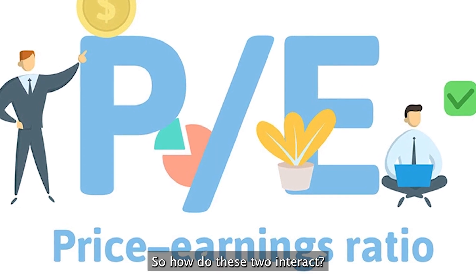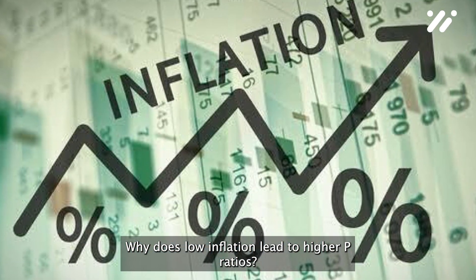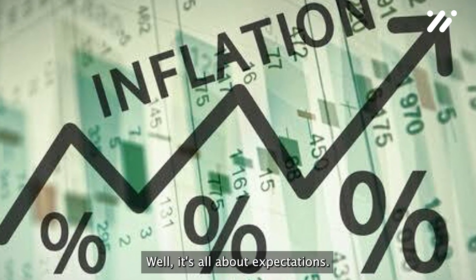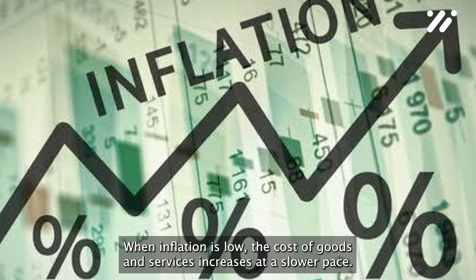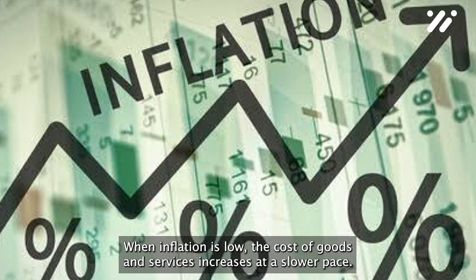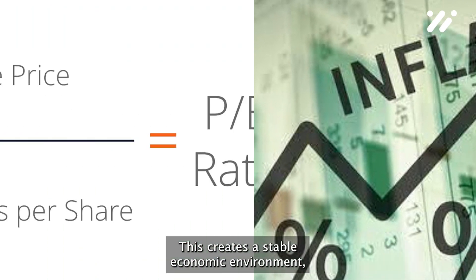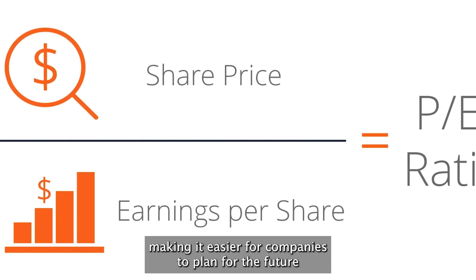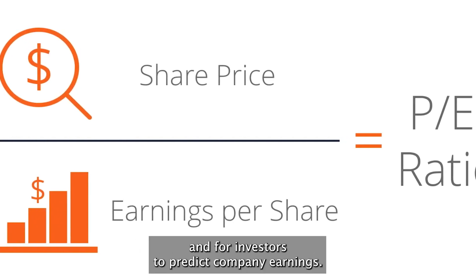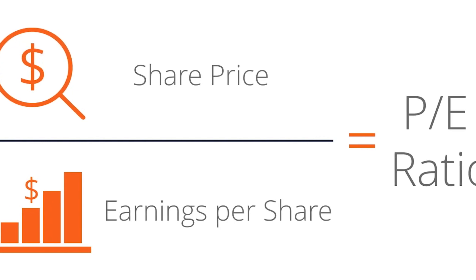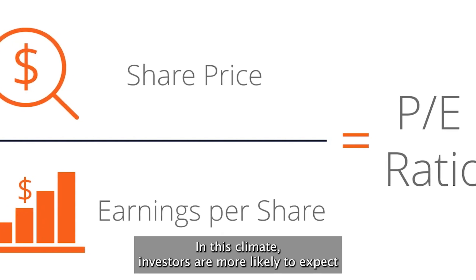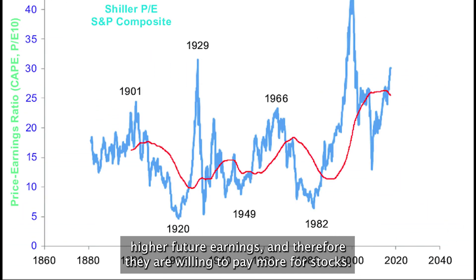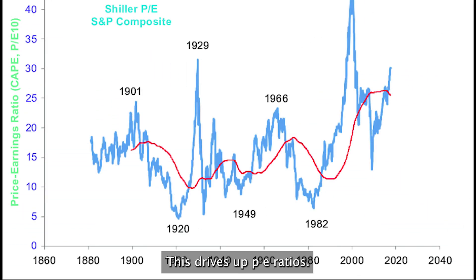So how do these two interact? Why does low inflation lead to higher P.E. ratios? Well, it's all about expectations. When inflation is low, the cost of goods and services increases at a slower pace. This creates a stable economic environment, making it easier for companies to plan for the future and for investors to predict company earnings. In this climate, investors are more likely to expect higher future earnings and therefore they are willing to pay more for stocks. This drives up P.E. ratios.